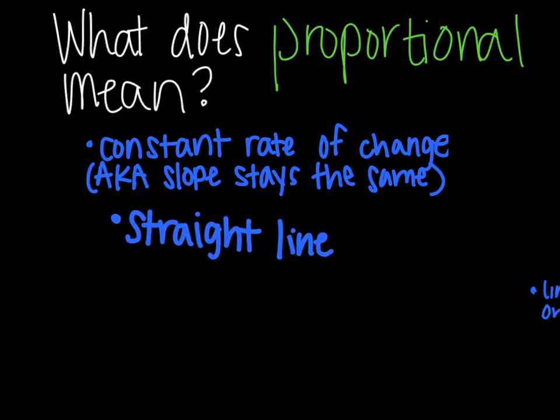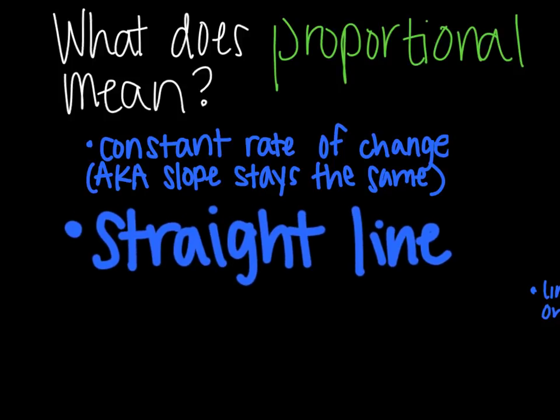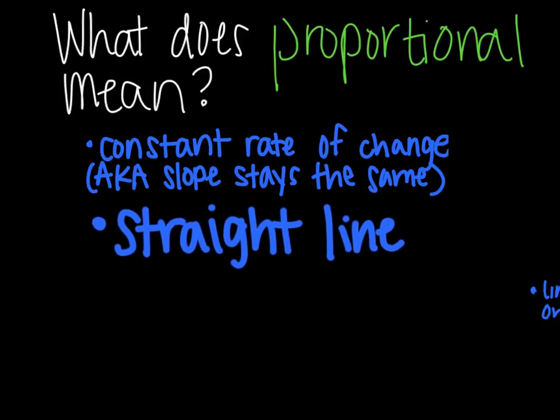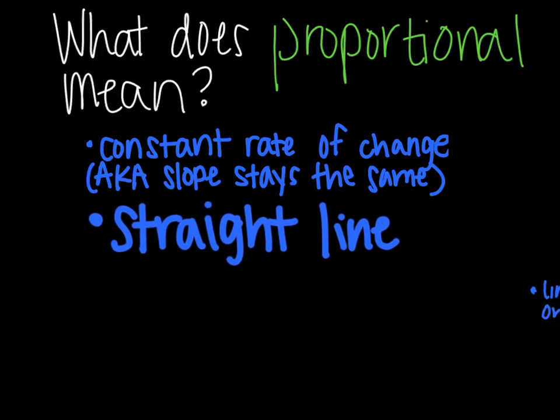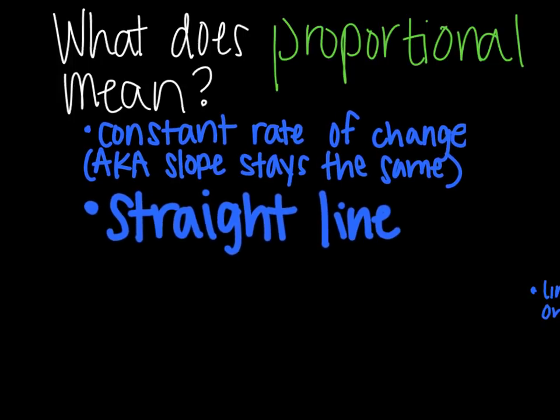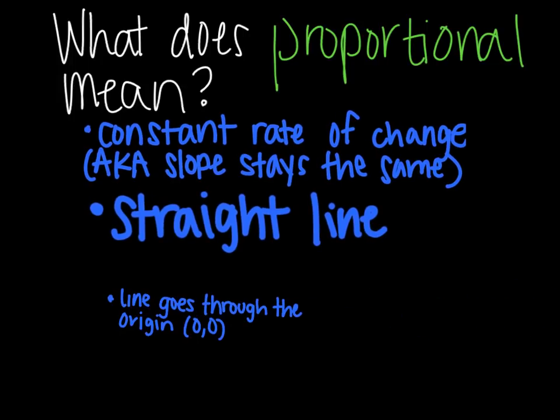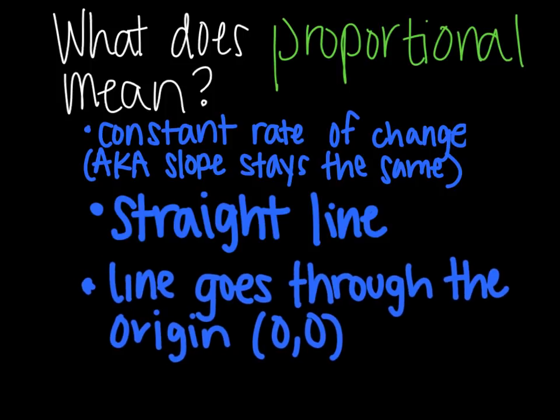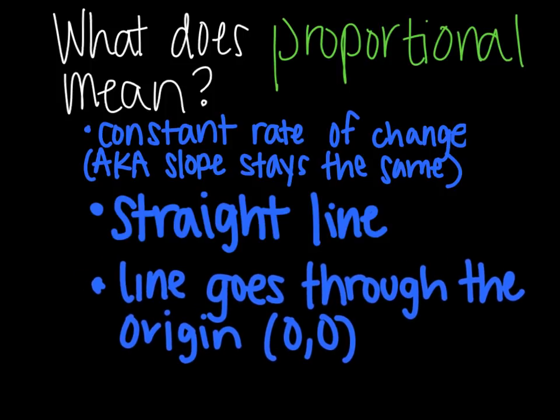The second requirement kind of ties into that, making it you have to have a straight line. So if the slope is the same, it should make a straight line. So that goes hand in hand. And then the third requirement is that the line goes through the origin. It has to go through that origin, 0, 0. So table, graph, whatever you're dealing with, has to meet all three of these criteria for it to be considered proportional.